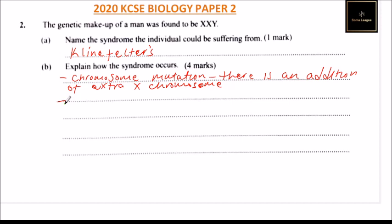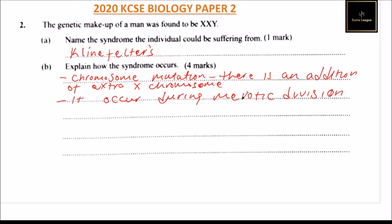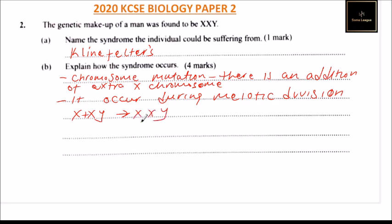Another way is that it occurs during meiotic division. This is where a sister chromosome fails to segregate. The sister chromosomes refuse to segregate or divide, and therefore it joins with X or Y, resulting in XXY. So we have a gamete that has three chromosomes.